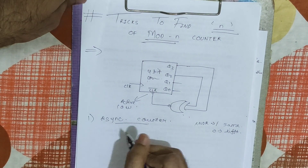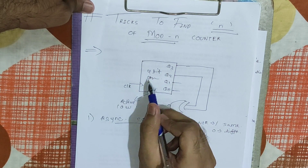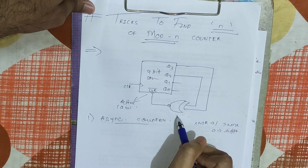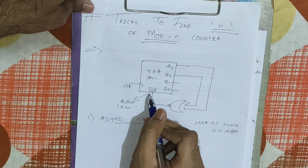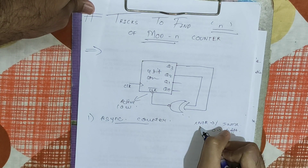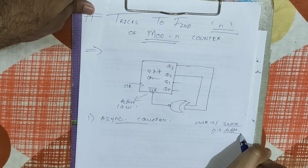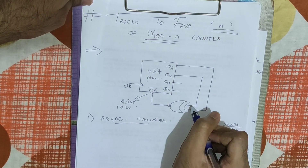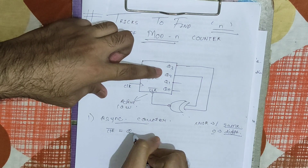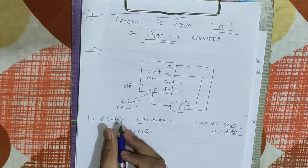Now we will see the trick for a synchronous counter. Here we are given a four-bit counter treated as a synchronous counter, and the clear-bar is controlled by an XNOR gate. Since clear-bar is used, clear will be activated for a zero input. The XNOR output is one when inputs are the same and zero when inputs are different. So we need to find the state when Q3 and Q2 are different, because clear-bar can be written as Q3 XNOR Q2.